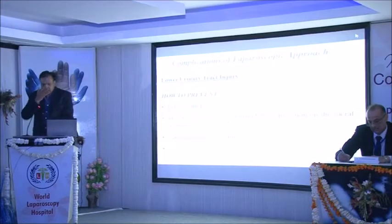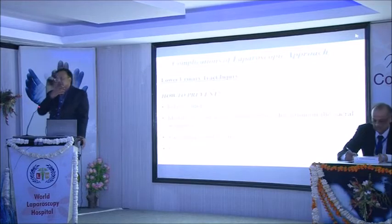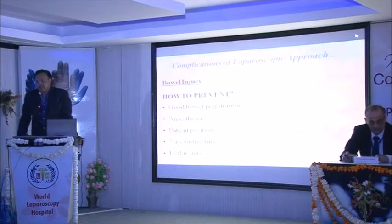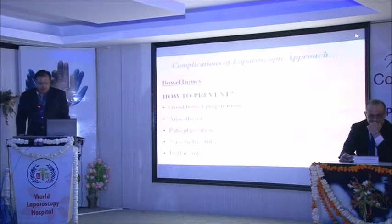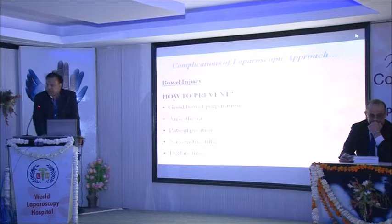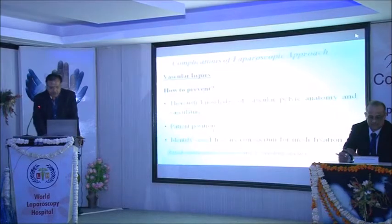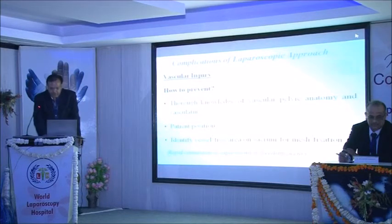Lower urinary tract injury — how to prevent? Foley's catheter in the bladder, identify the right ureter at the level of the sacral promontory, and careful placement of sutures — not to take a suture through the bladder or ureter. Bowel injury — good bowel preparation is a must. If the bowel is distended, it keeps coming into your field; the assistant will keep pushing it and it can cause injury to the bowel. Patient position — Trendelenburg should be used, left lateral tilt can be done so that the bowel falls away from the sacral promontory, and an energy tube can be used. Vascular injury — you should know the anatomy of the lateral pelvic sidewall and identify the vessel-free area of the sacrum for mesh fixation.